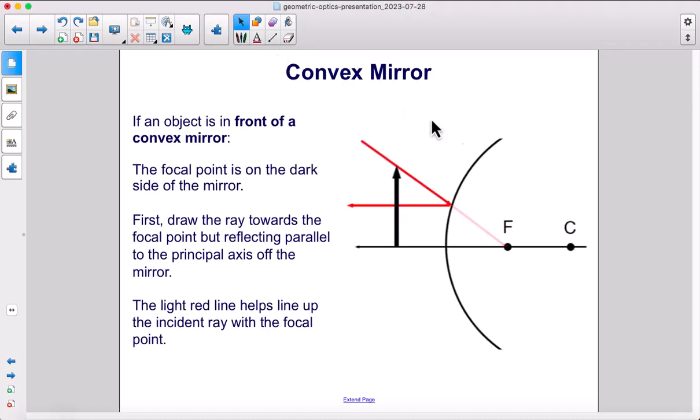Convex mirrors. A convex mirror has the reflective portion on this side, so this is the back of the mirror. You can draw your little dashes if you want to remember that.